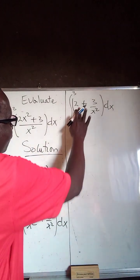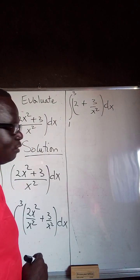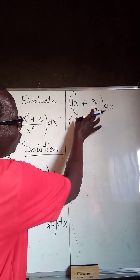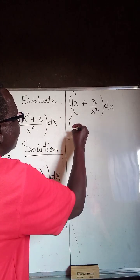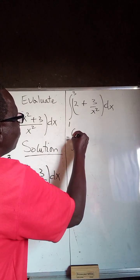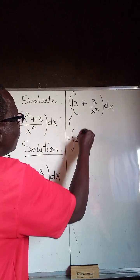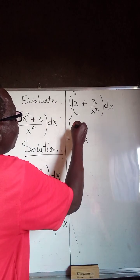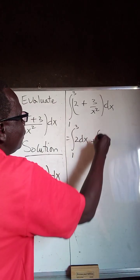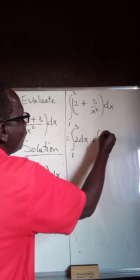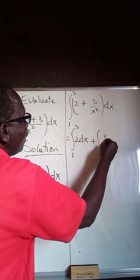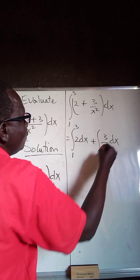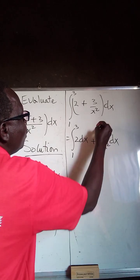Now, this is the sum of two functions, so we take the sum of two integrals. That is, the integral of 2 with respect to x, evaluated from 1 to 3, plus the integral of 3 divided by x squared with respect to x, evaluated from 1 to 3.